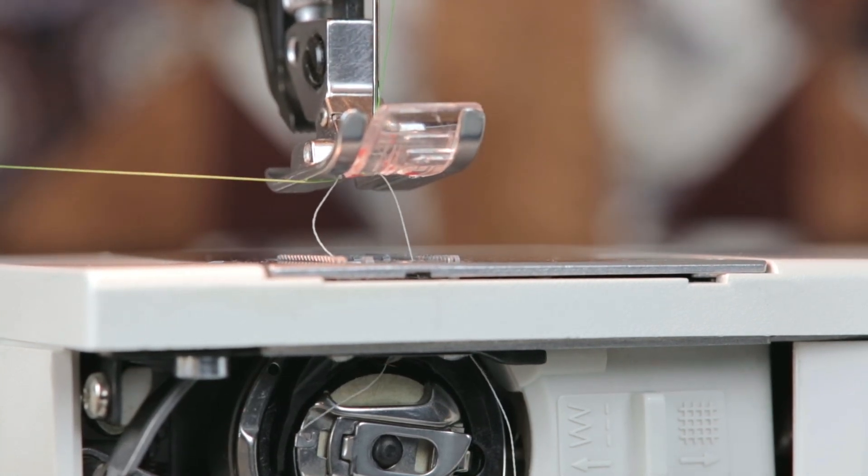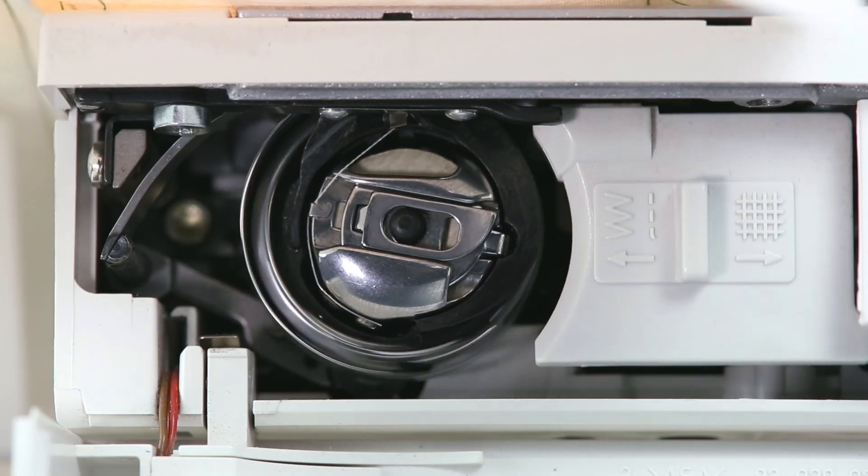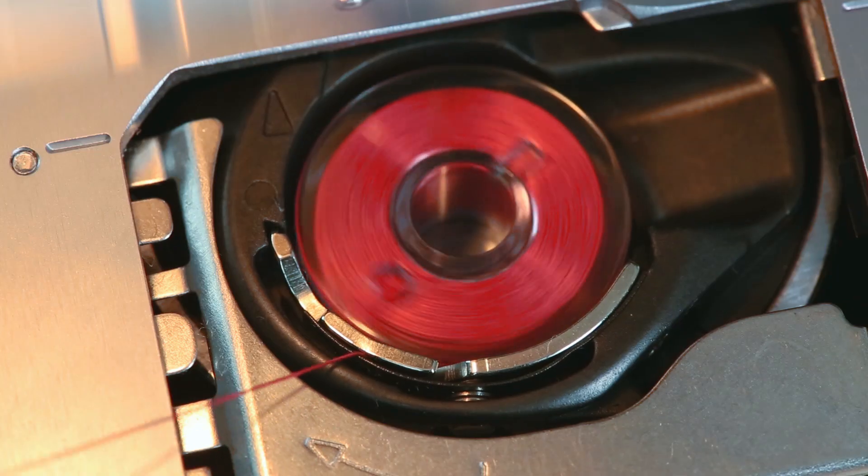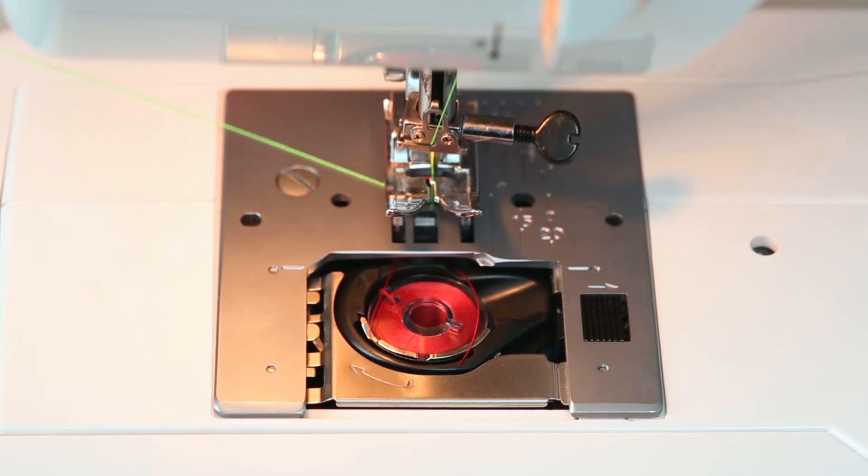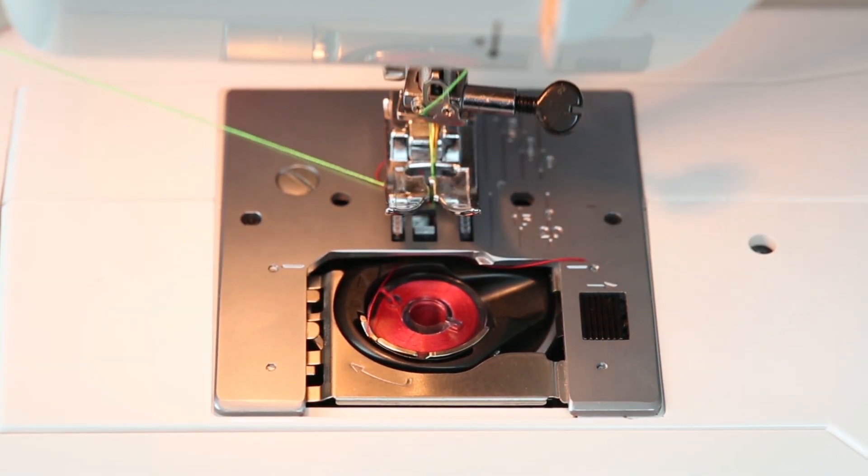You can see how the hook rotates and grabs the thread with every revolution. Some machines have a drop-in bobbin and don't require a metal bobbin case. The stitch is created in the same manner with the hook rotating around the bobbin case and grabbing the thread.